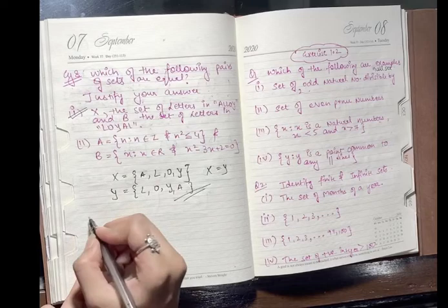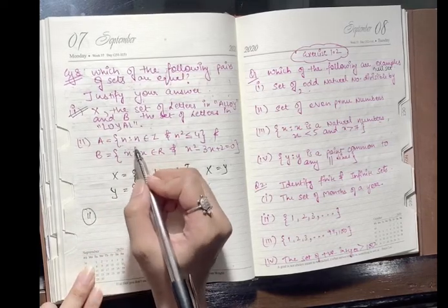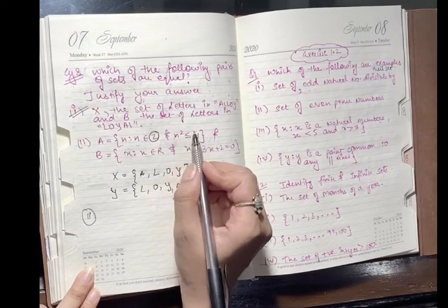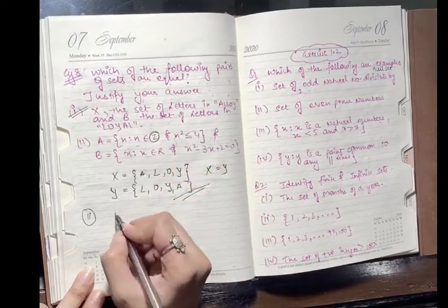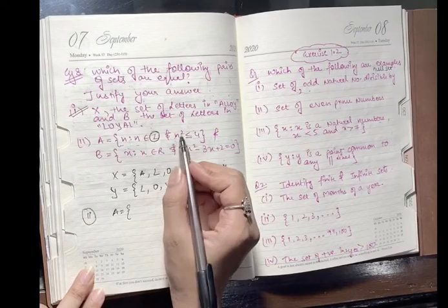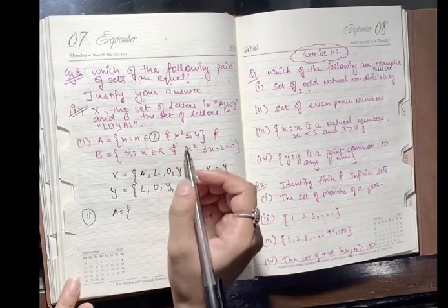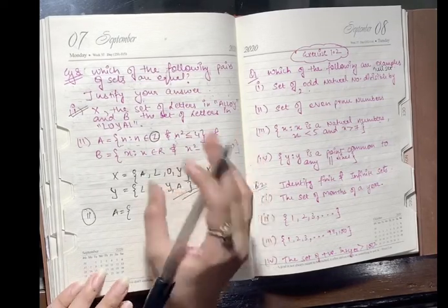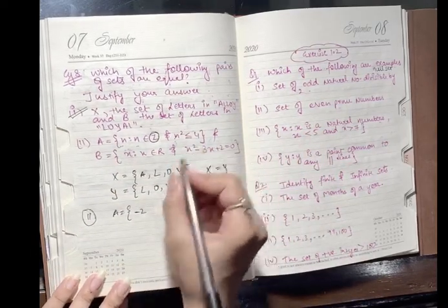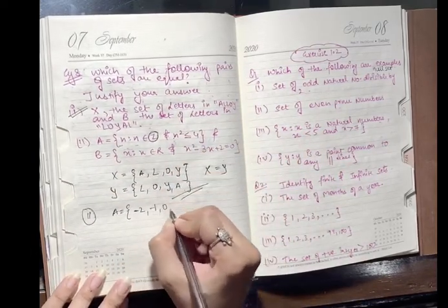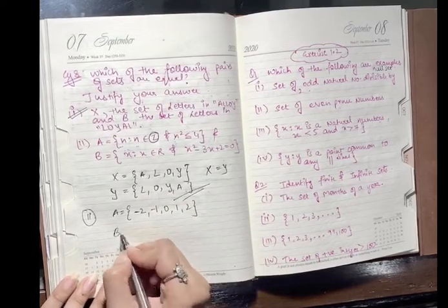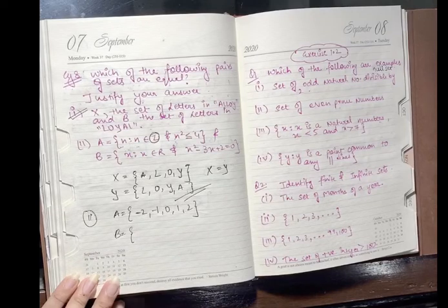Now for the second part: set A is defined as n such that n belongs to Z (integers) and n² ≤ 4. We need to write the roster form. Since it says integers — not just positive — we consider both negative and positive. So: (−2)² = 4 ✓, (−1)² = 1 ✓, 0² = 0 ✓, 1² = 1 ✓, 2² = 4 ✓. So A = {−2, −1, 0, 1, 2}.